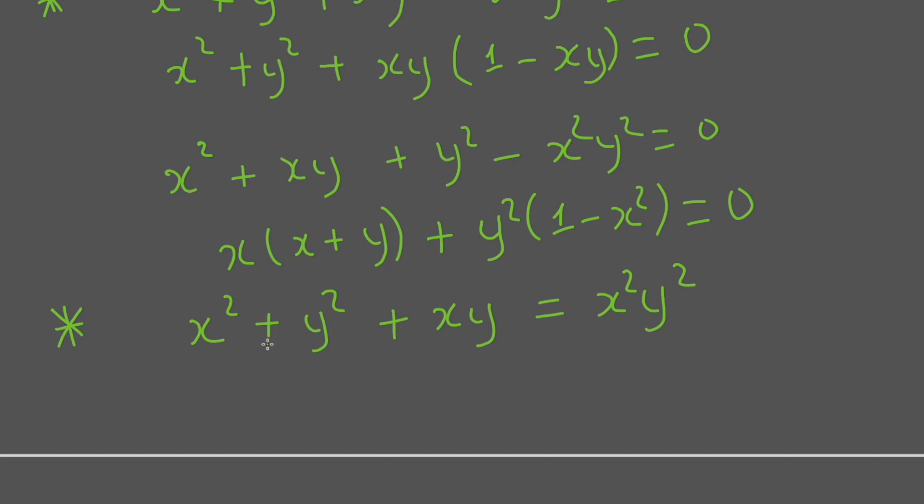This expression here reminds us of a very popular formula. It is (x + y)² minus xy. Then we have to add minus 2xy back, and x² + y² + xy.